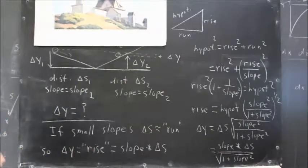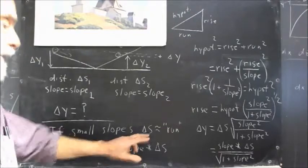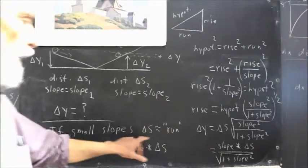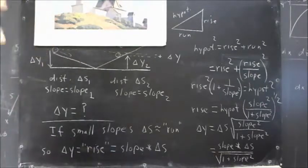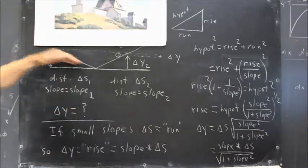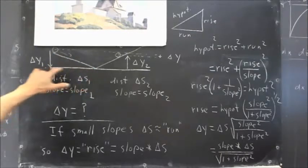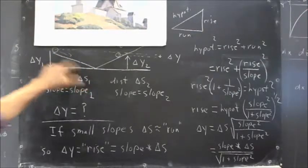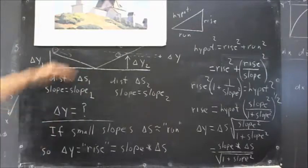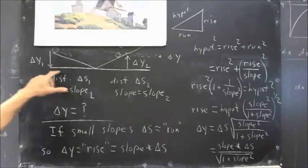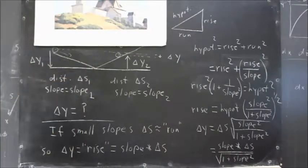So, if the slopes are small, if a slope is small and we have a distance delta S along that slope, then delta S is approximately equal to the run. There's not much difference, for example, here between the distance we travel here and the distance corresponding to the run between this point and this point. Because the angle is small, the hypotenuse of this right triangle is going to be very close to the horizontal leg.